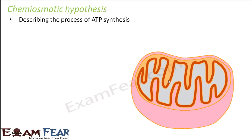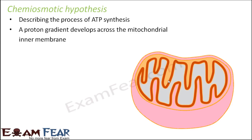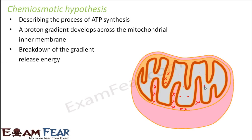This hypothesis describes the process of ATP synthesis. A proton gradient develops across the mitochondrial inner membrane — this is the inner membrane. Too many protons get collected on the outer side, and inside the proton concentration is less, so a gradient develops across this membrane.